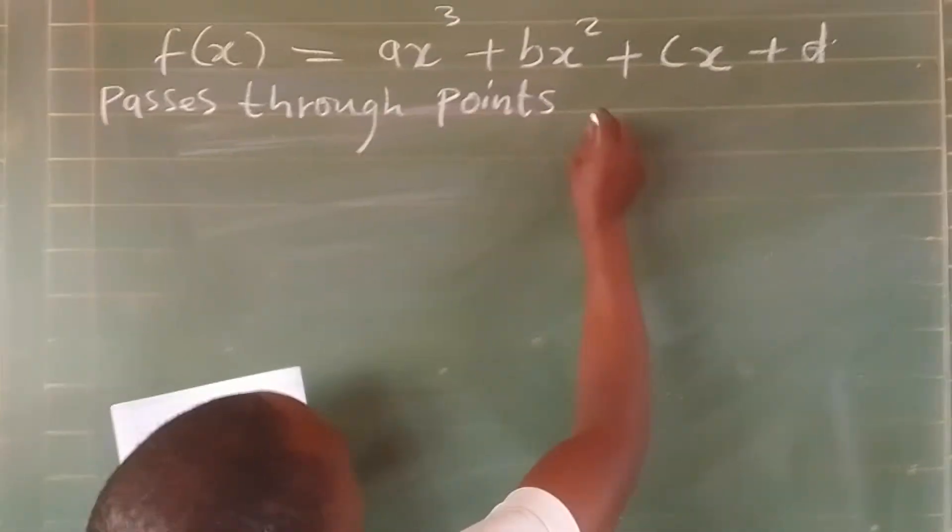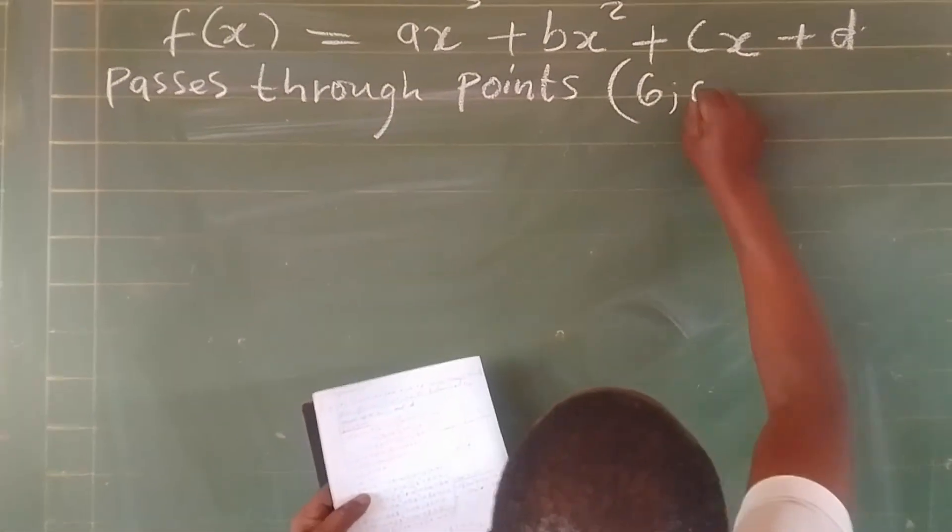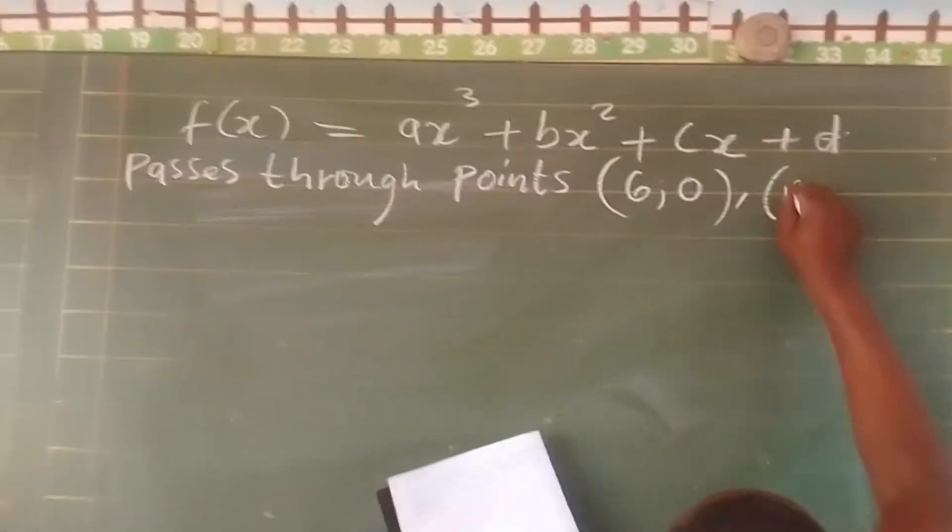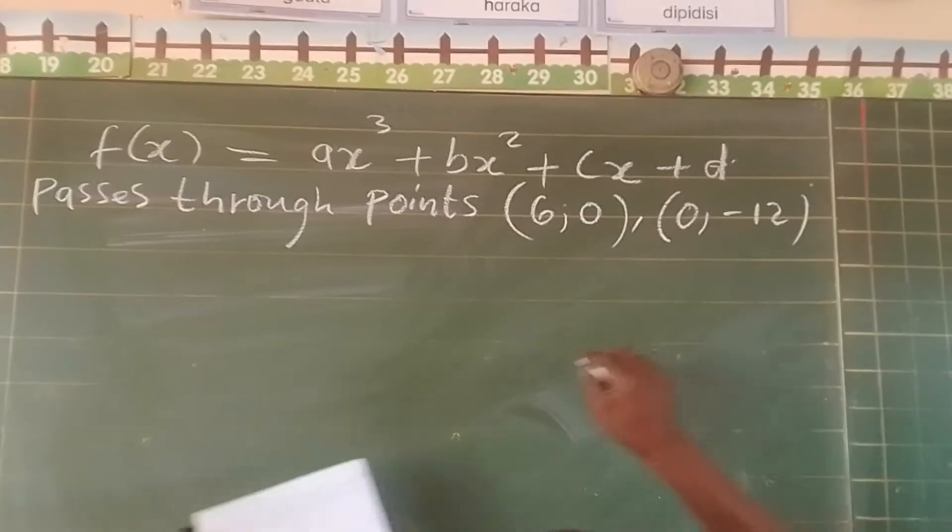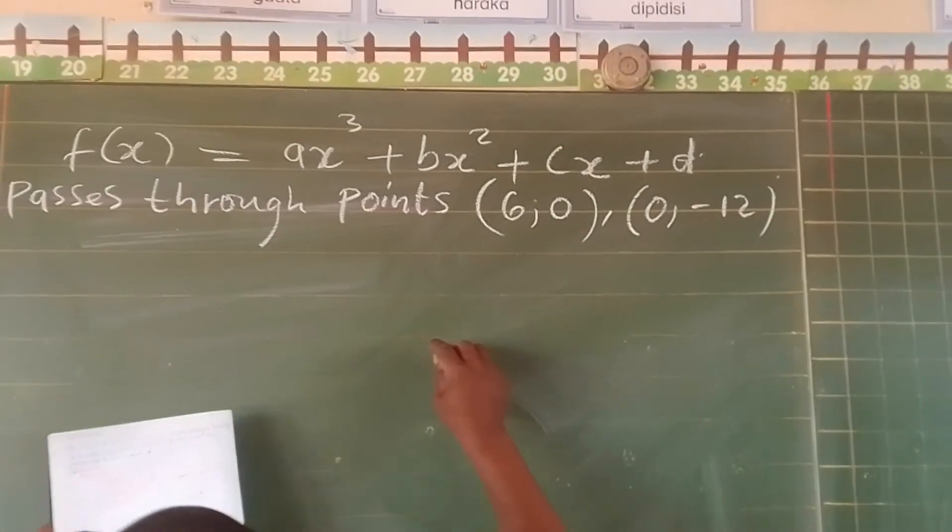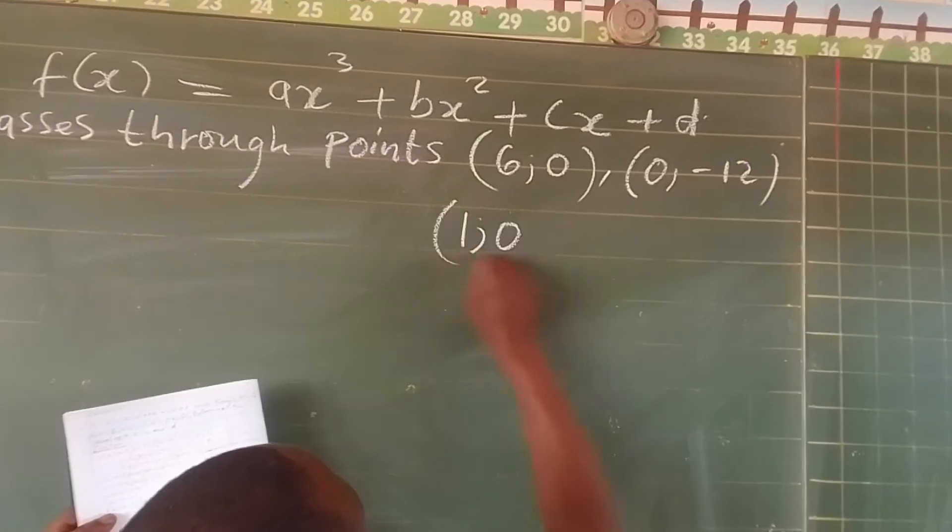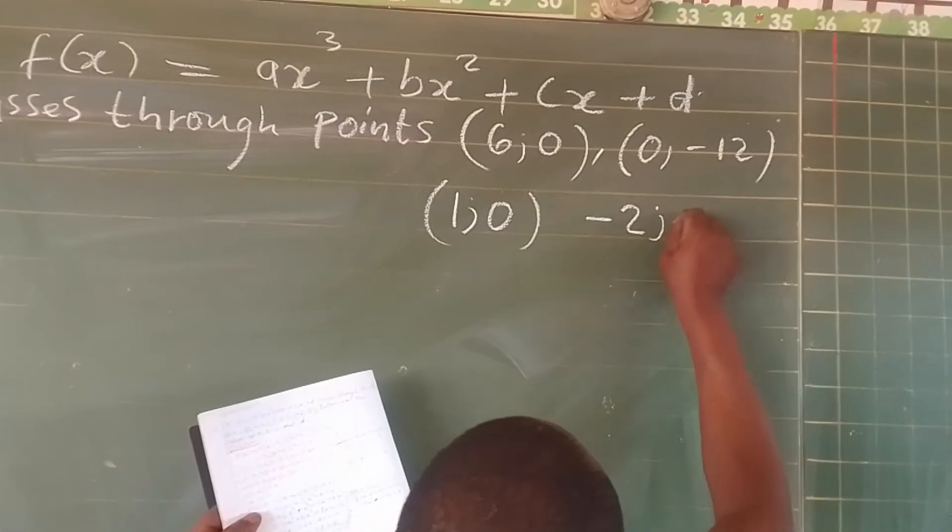(6, 0), (0, -12), (1, 0), and (-2, 0). This is what we are required to do.